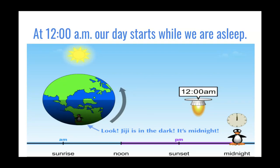Let's take a look at our friend Gigi — she's all the way on the right. You can see Gigi's at the very bottom of the earth in our picture, and it's dark because it's 12 a.m. At 12 a.m. our day starts while we are asleep. As you can see, the clock is at 12 o'clock — it's written 12:00 a.m. — and there's Gigi.